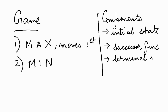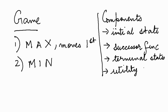The third component is the terminal states — these are the states where the game has ended. And finally we have the utility function, which gives a numeric value to all the terminal states. High values are considered good for Max and bad for Min.